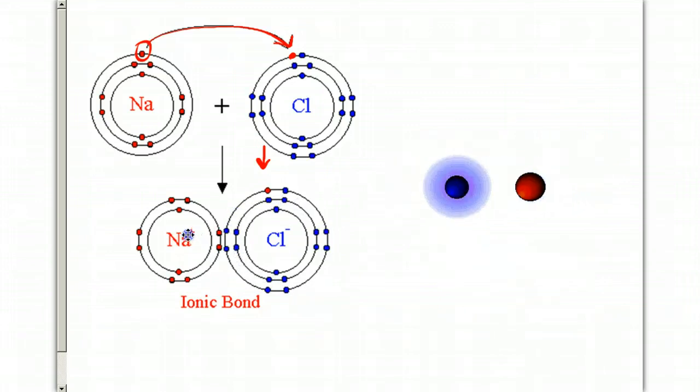They also both have their charges. Sodium is plus one, chloride is minus one. And so, they are attracted together, and they're held together by something called an electrostatic attraction.